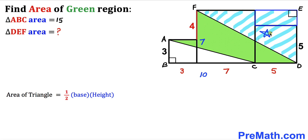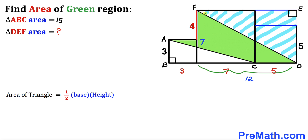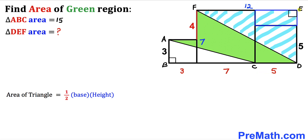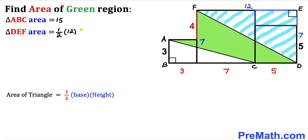Now let's calculate the area of triangle DEF using the same formula: area equals one-half times base times height. The base EF is seven plus five, giving us twelve. The height DE equals seven, matching the side of the largest square. So the area of triangle DEF equals one-half times twelve times seven, which gives us 42 square units.